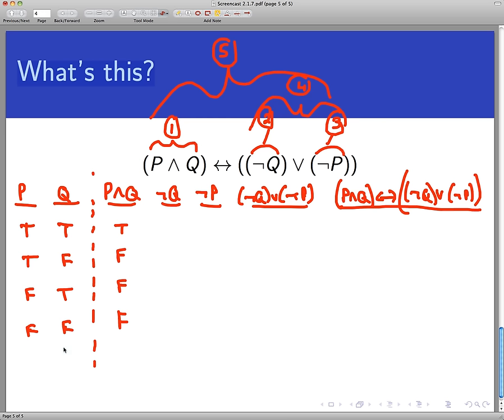Not Q is just the opposite of Q, so this is false, true, false, true, and not P is the opposite of P, so this is false, false, true, true.